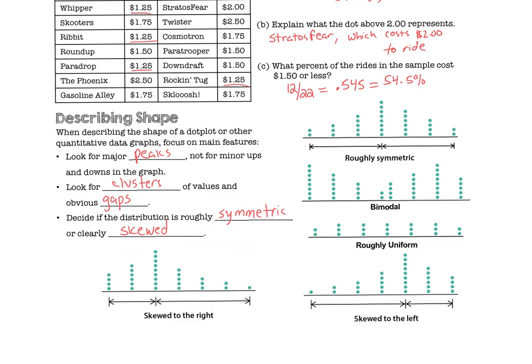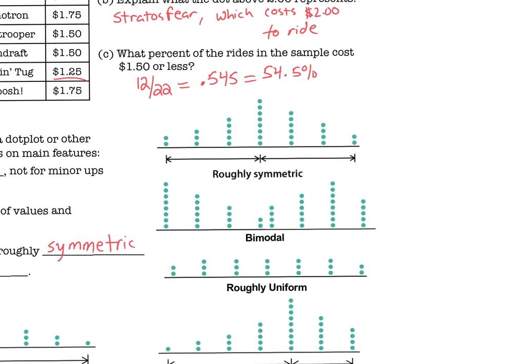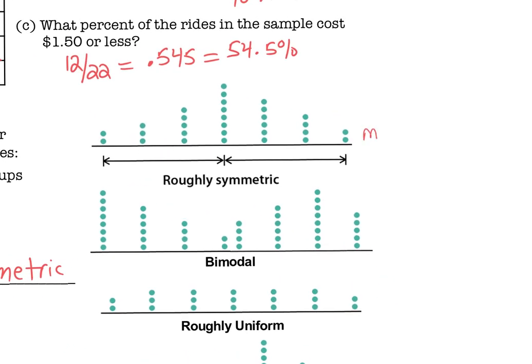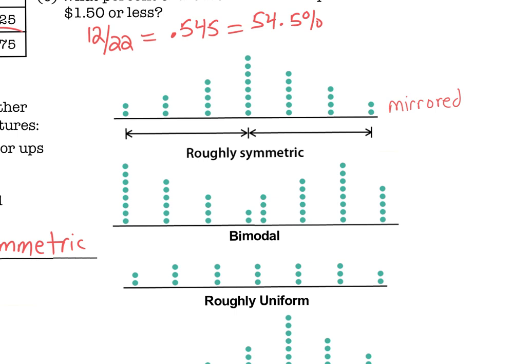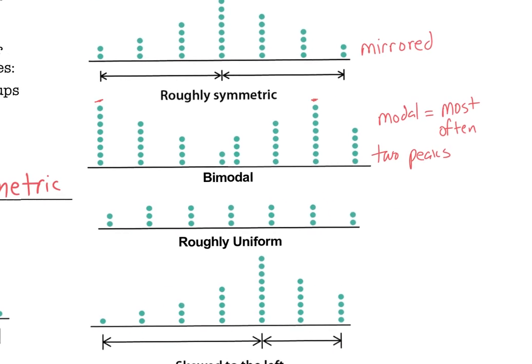If we look right here, we got some different examples. Roughly symmetric, you see how it looks perfectly just like a mirror. It looks roughly mirrored. This right here is what we call bimodal, and we call it bimodal because the term modal is the term for most often. We have really two peaks here and here. So because we have two peaks, we call that bimodal. Roughly uniform, it's flat. Everything's about the same across the board. Every column of dots is about the same number there.